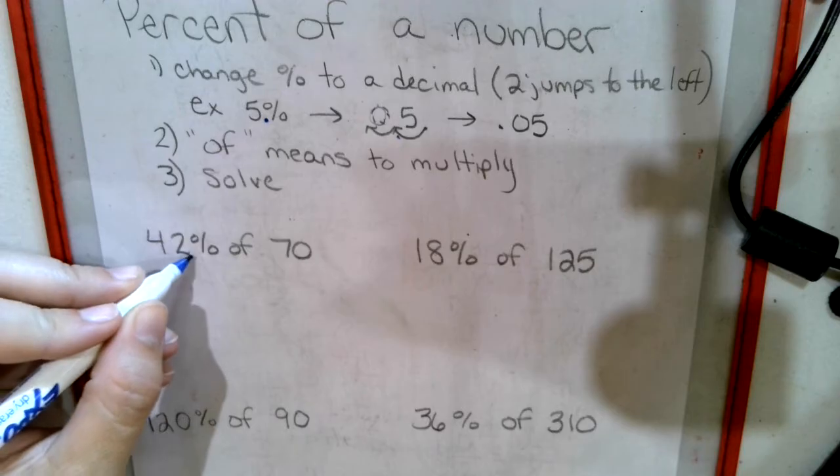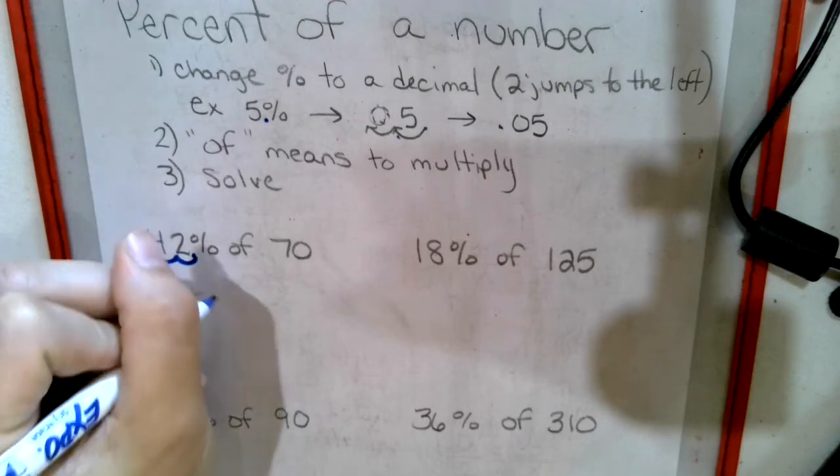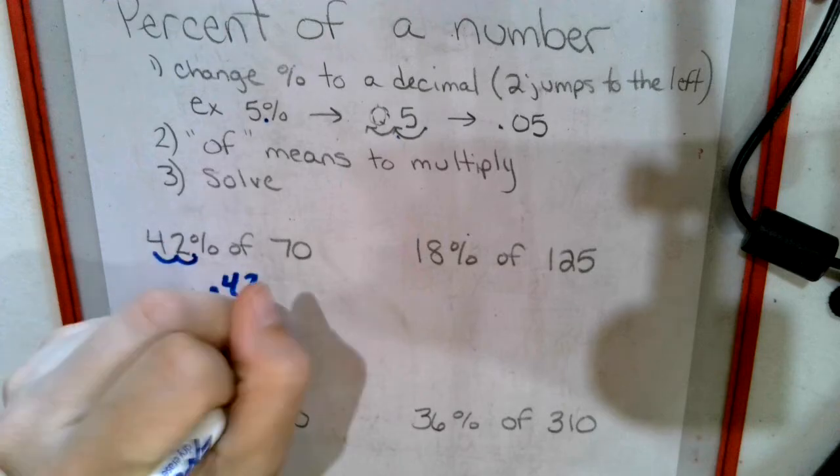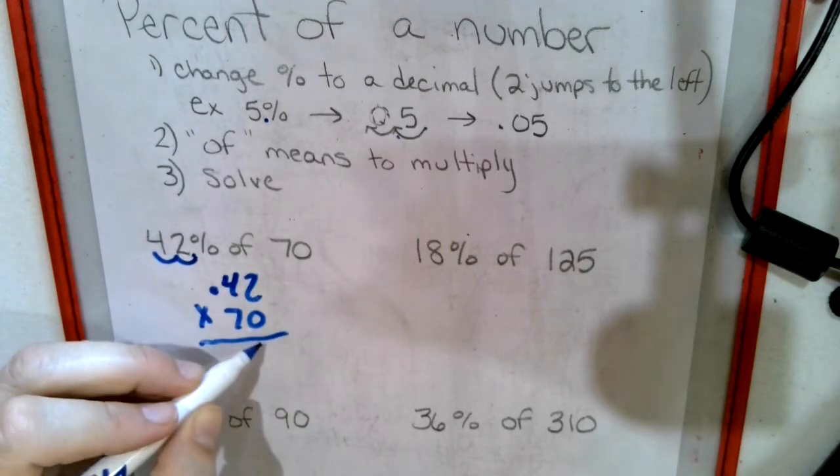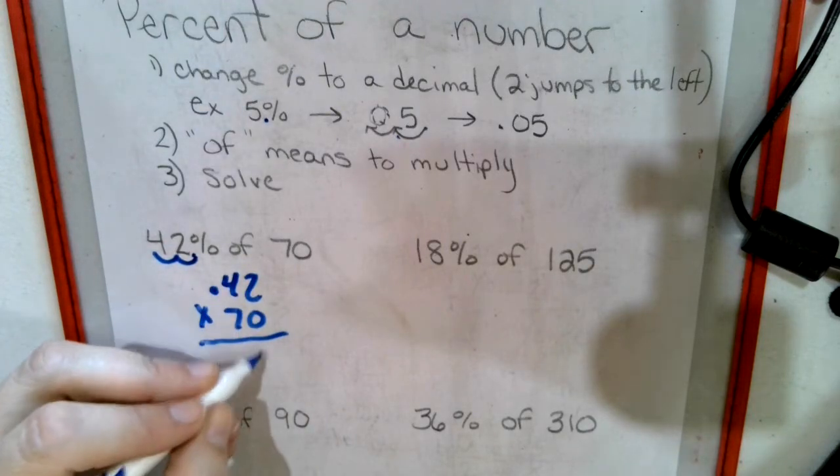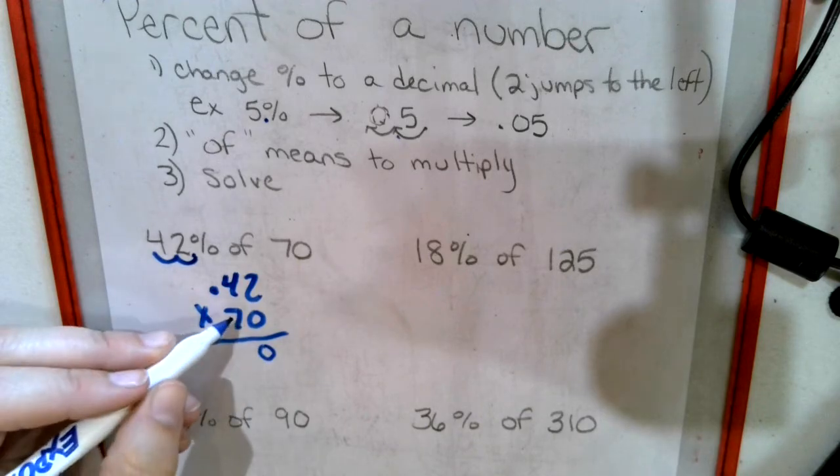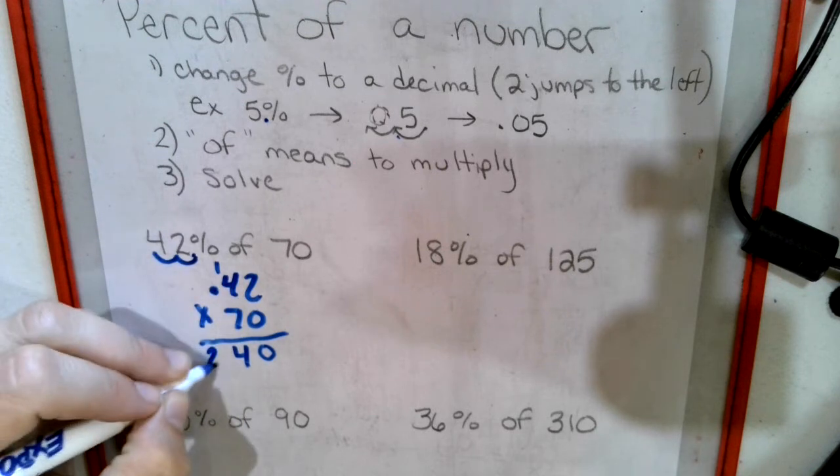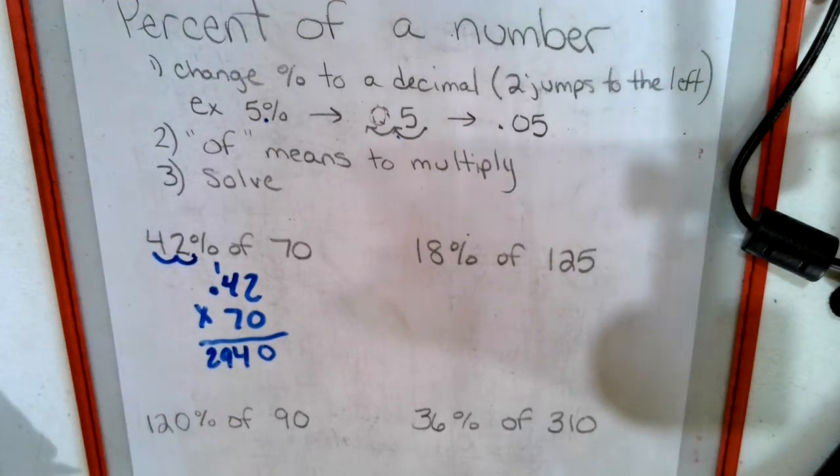We're going to jump two spots, one, two. So we have .42 - 'of' means times - times 70. We don't have to write 0, 0, so we can just place a 0. 7 times 2 is 14, 28, 29.